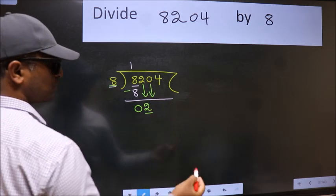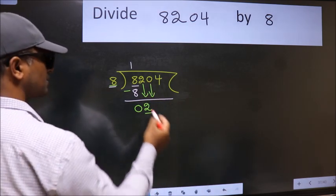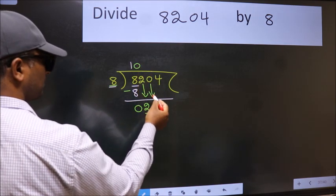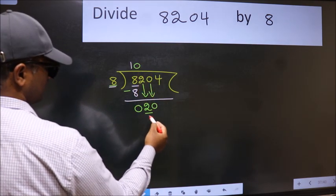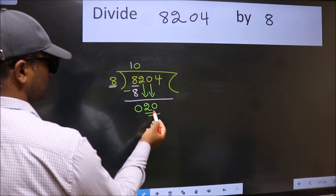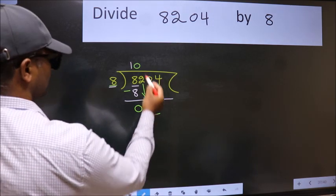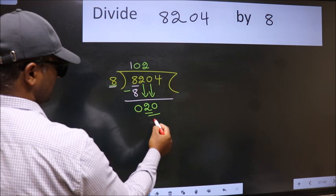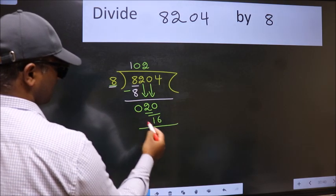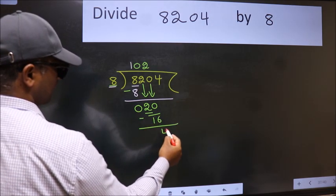The rule to bring down the second number is put 0 here. Then only we can bring this number down. So 20. A number close to 20 in the 8 table is 8 twos, 16. Now we subtract. We get 4.